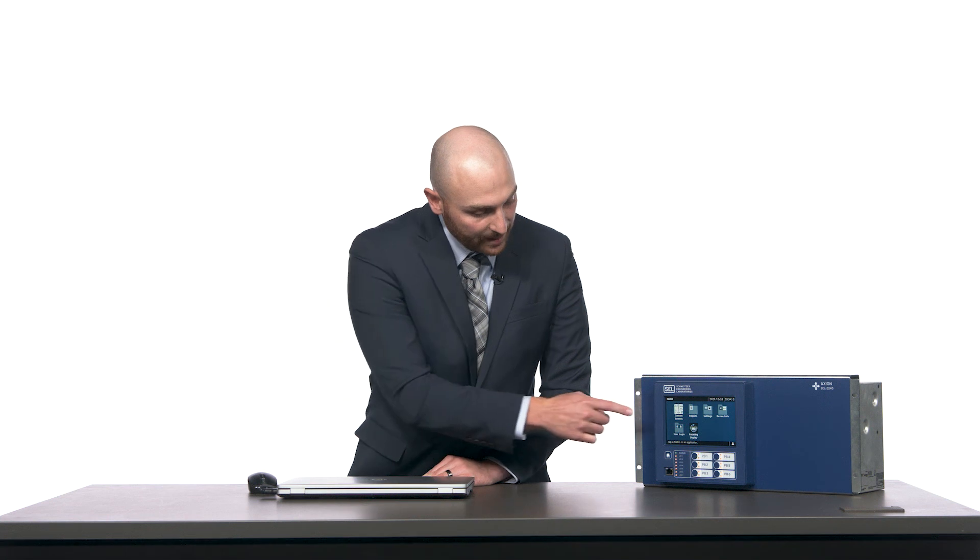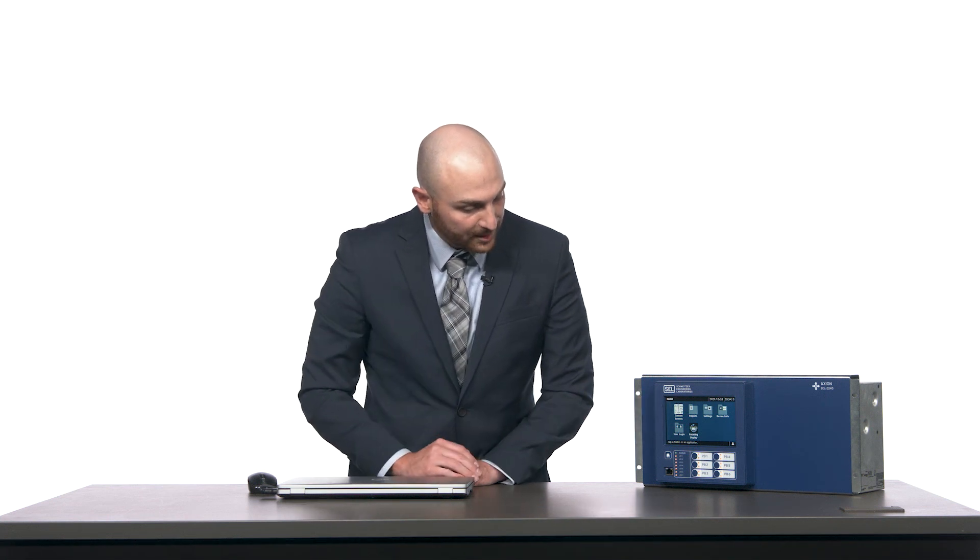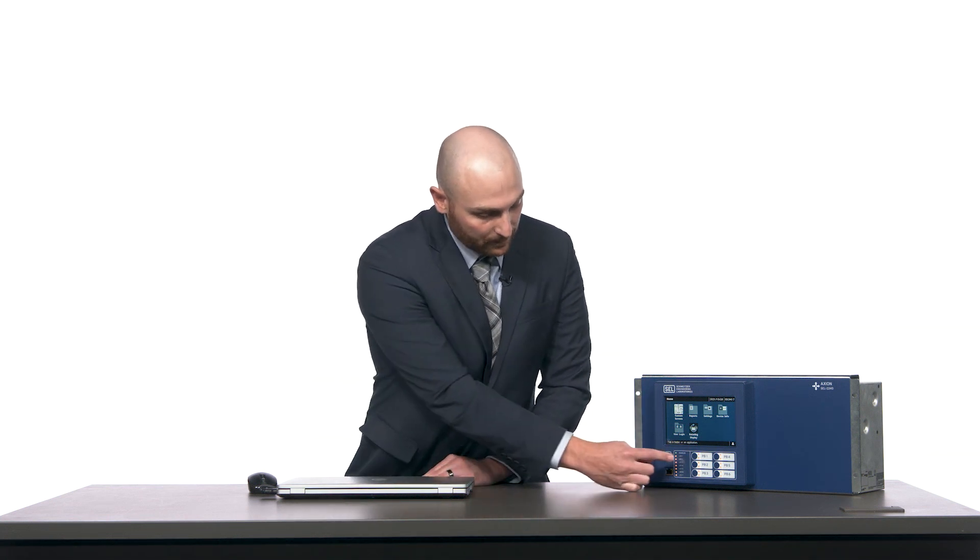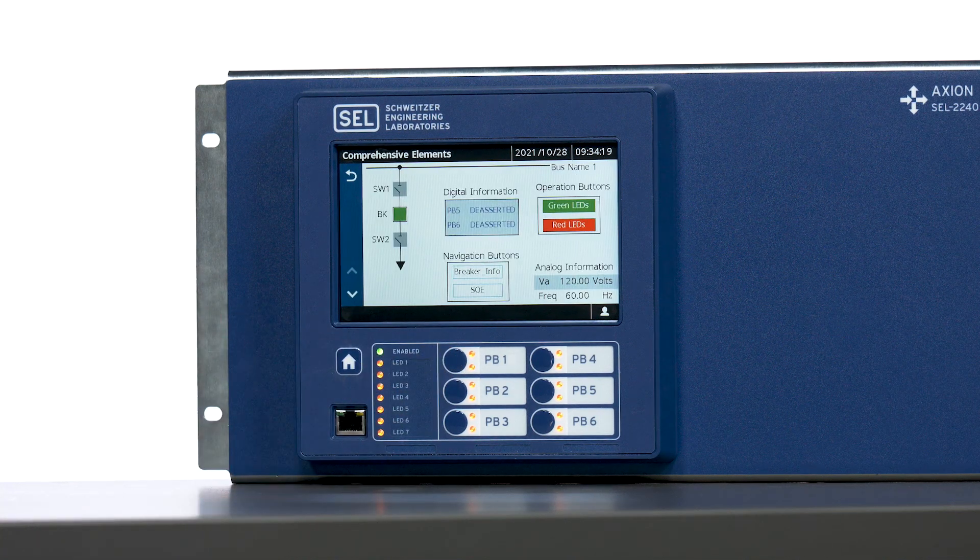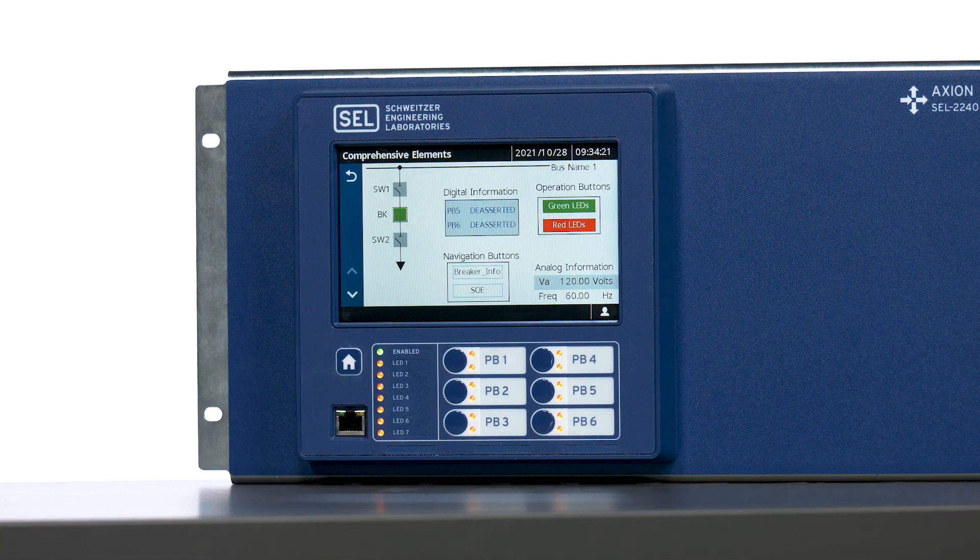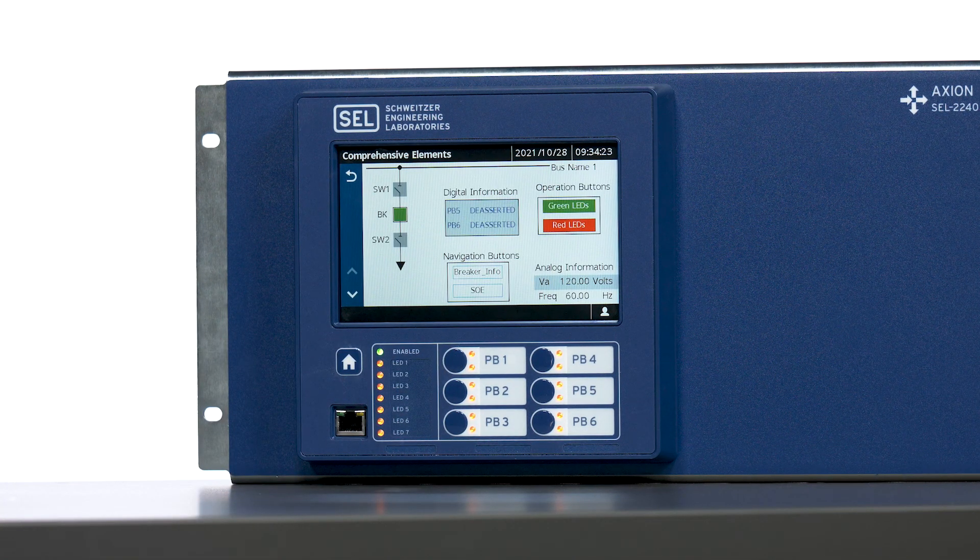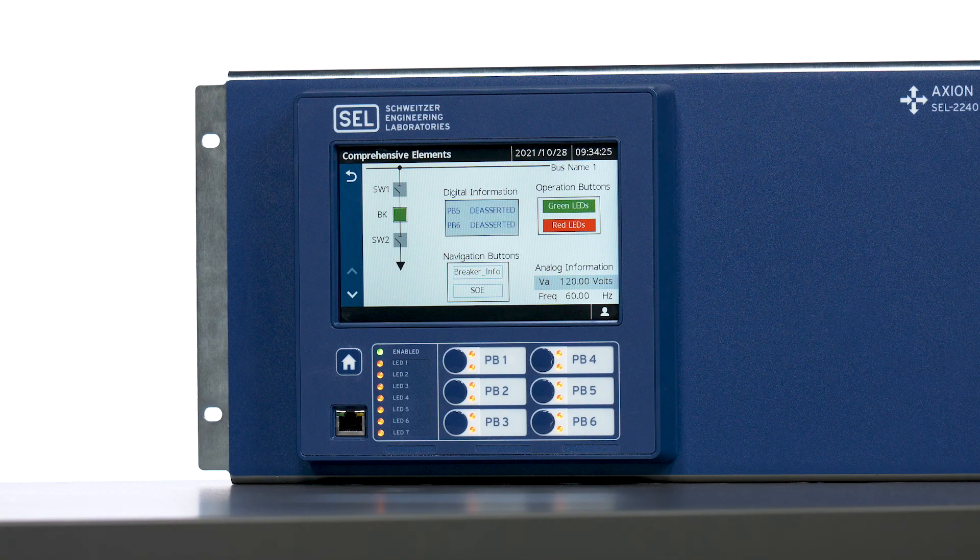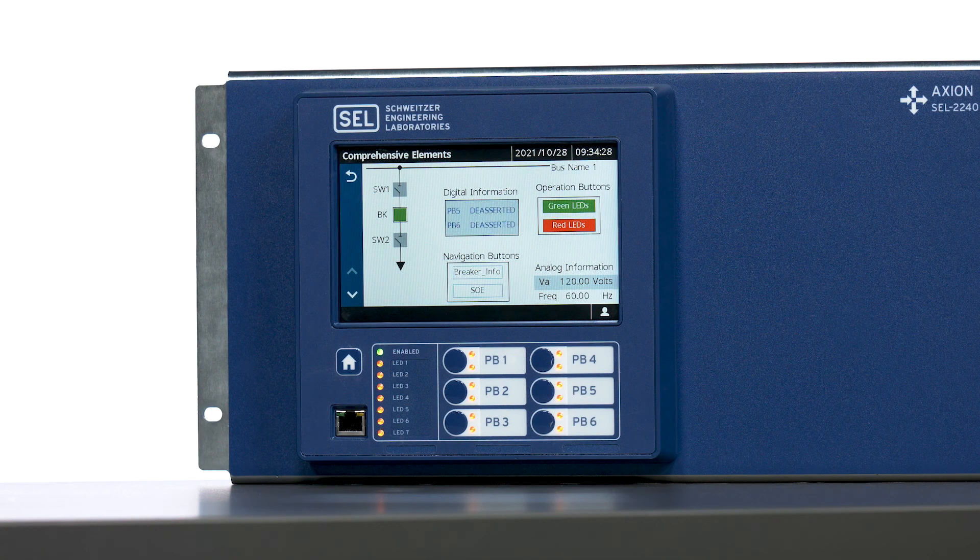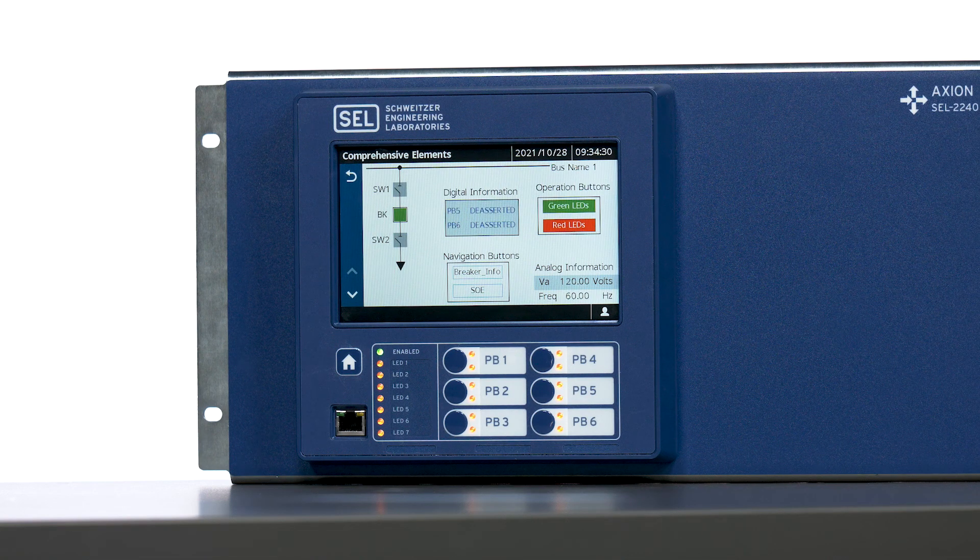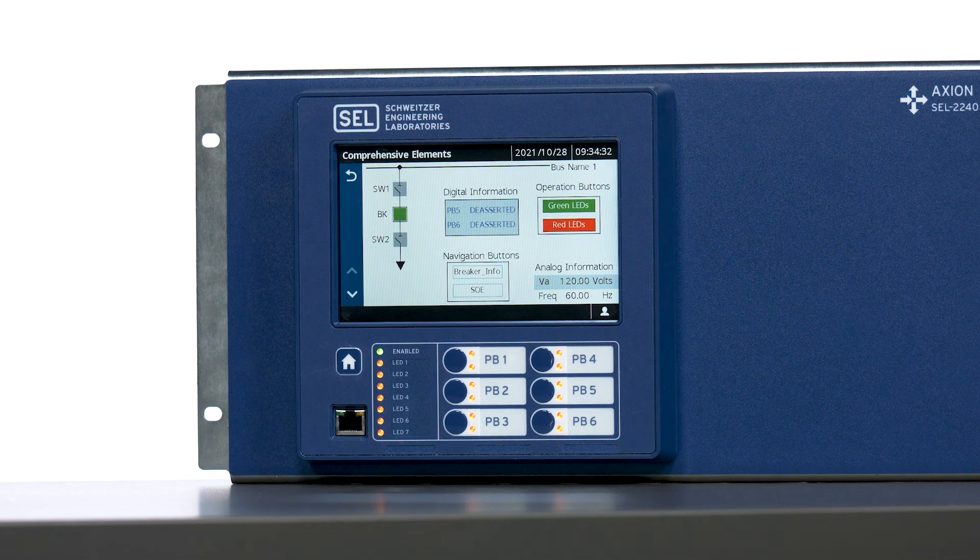This project has push button one previously configured to navigate me to a custom screen within the custom screens application. Pressing push button one, we can see it navigates me to the comprehensive elements screen. This screen contains disconnect switches, a breaker, digital information, operation buttons, navigation buttons, and analog information.